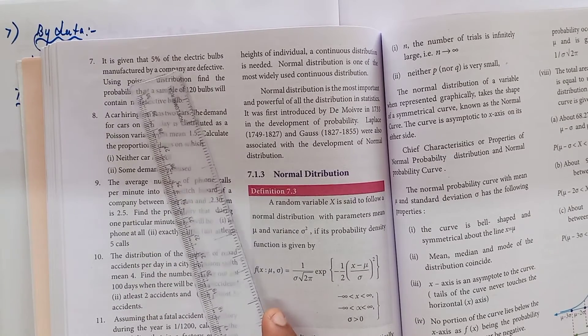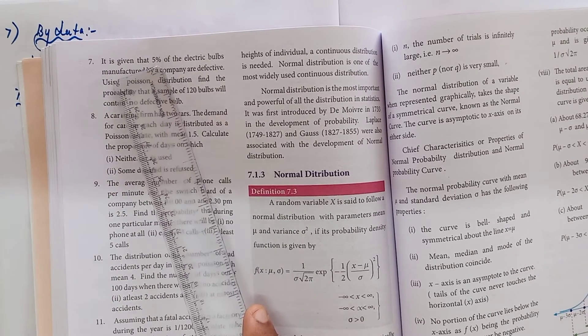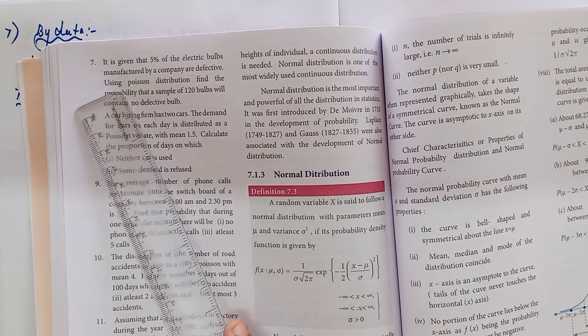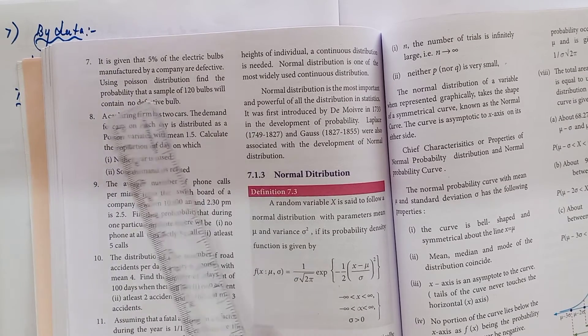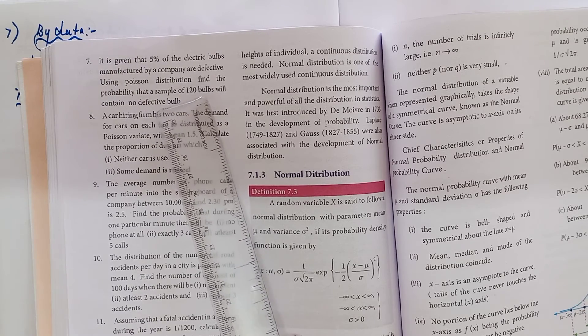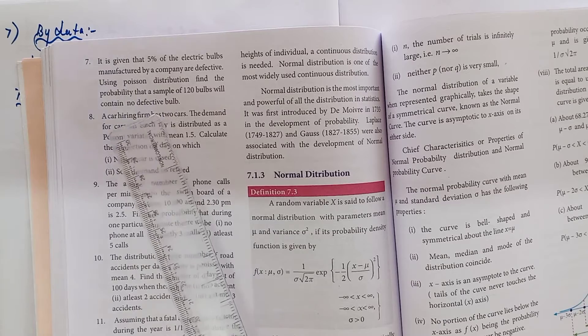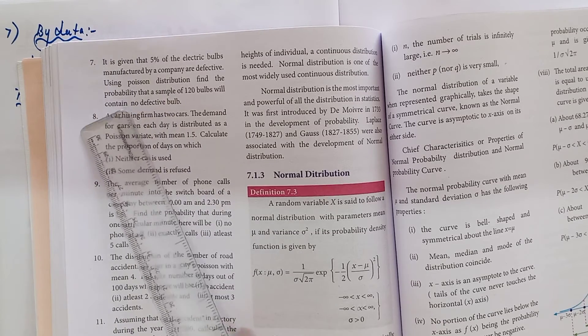It is given that 5 percent of the electric bulbs manufactured by a company are defective, that is the value of P equals 5 percent. Using Poisson distribution, find the probability that a sample of 120 bulbs, n equals 120, will contain no defective bulb. That means you have to find out probability of x equals 0.